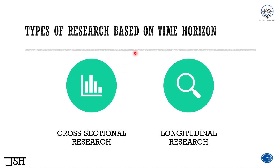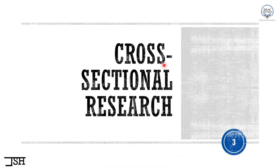As I showed you earlier, there are two types of research based on time horizon: one is cross-sectional research and the other one is longitudinal research. There is a very simple difference between these two types of research. Pay attention for the next one or two minutes and it will be very clear to you. Let's start with cross-sectional research first.